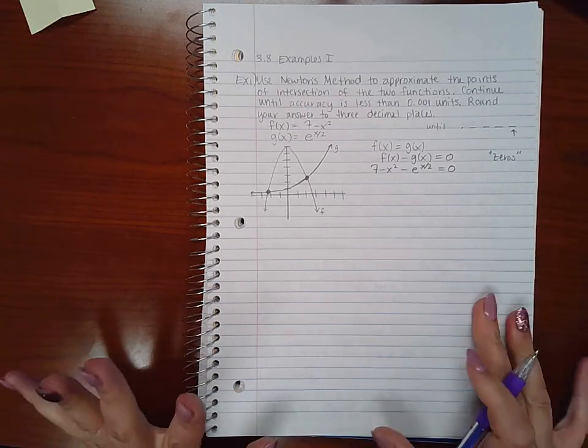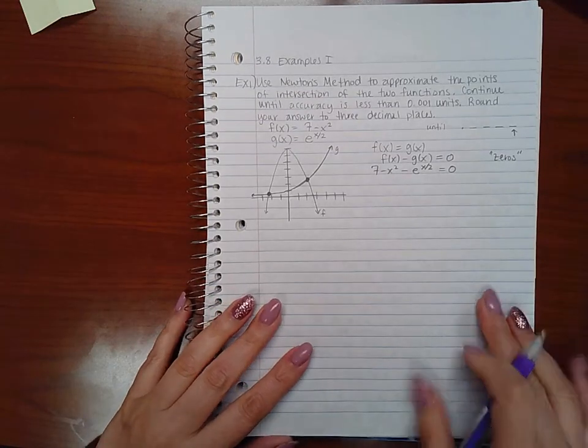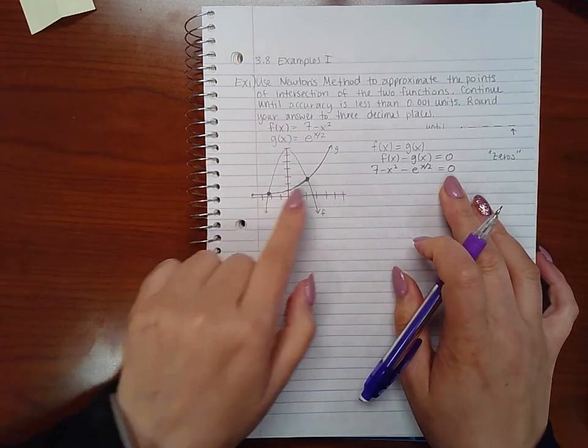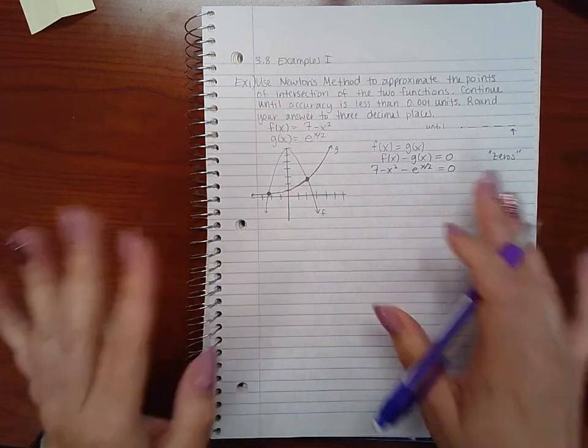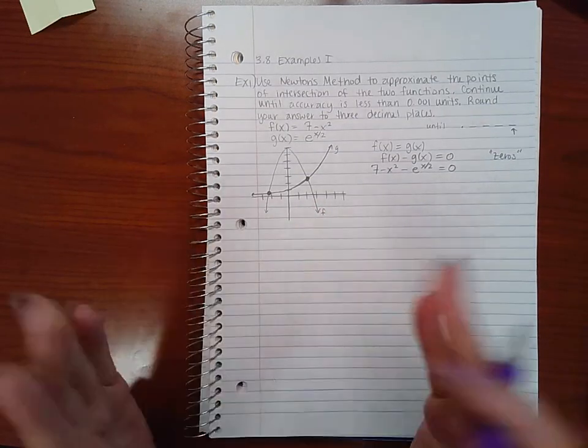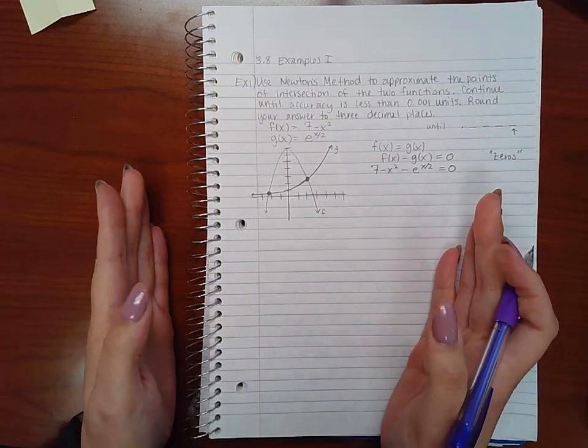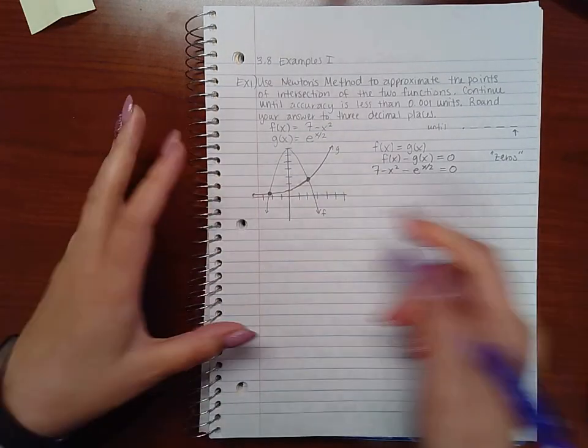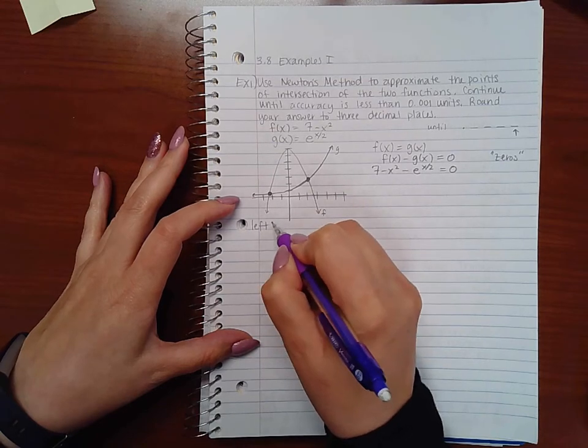And I'm going to try to find the zeros of this function. Now I do notice that there are two of them, and I kind of have an idea of what they're close to based on the graph, but I just don't know exactly what they are. So I'm going to split this up into two pieces, like the left and then the right.